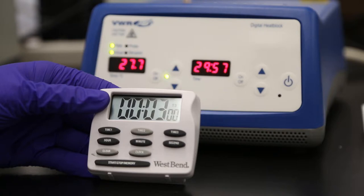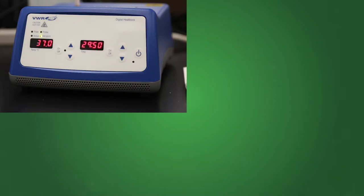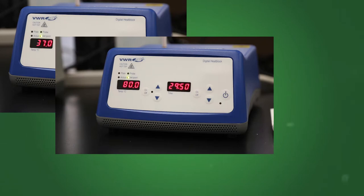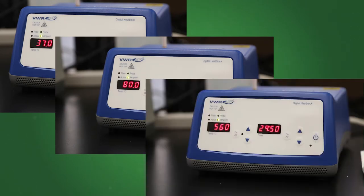Instead, use a timer similar to this one, set to 3 minutes. If you are using three single blocks, set the first to 37 degrees Celsius, the second to 80 degrees Celsius, and the last to 56 degrees Celsius. Remember, the green light must be on for the block to heat.